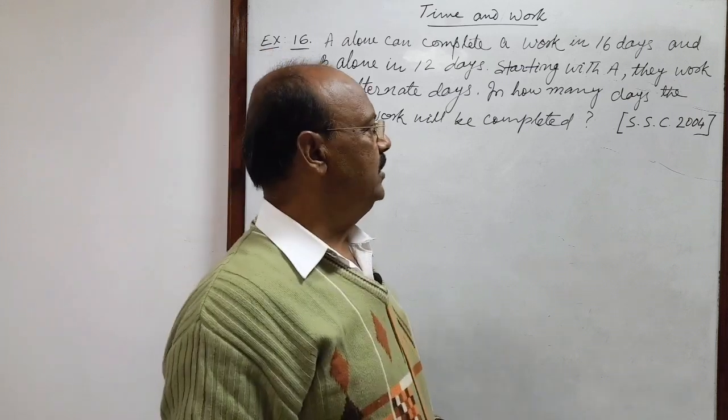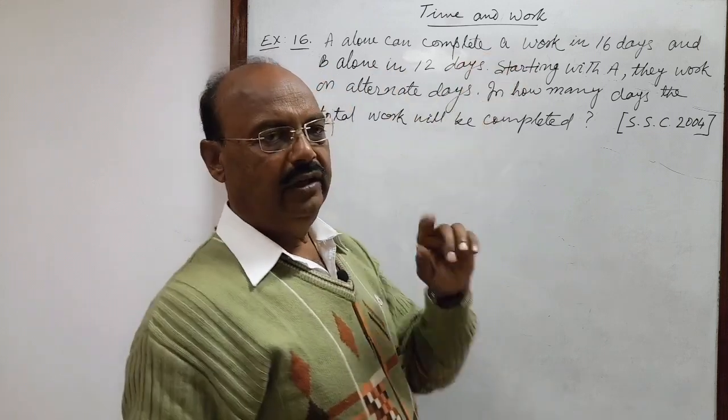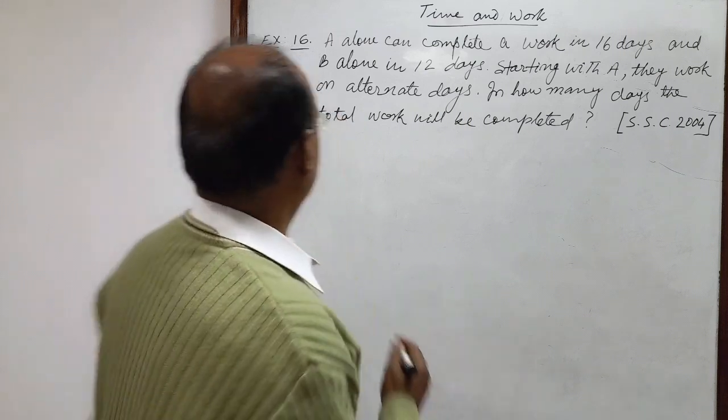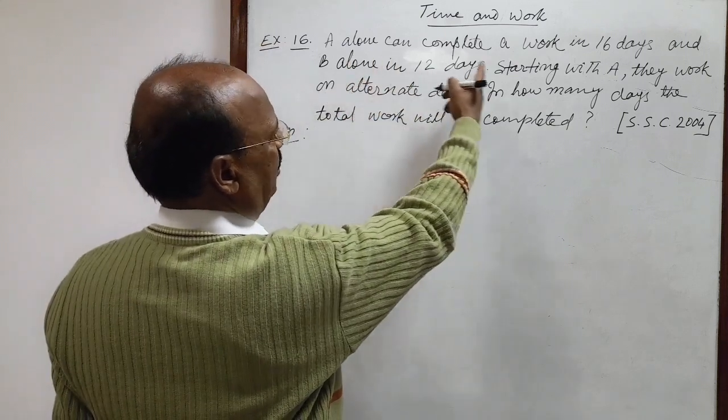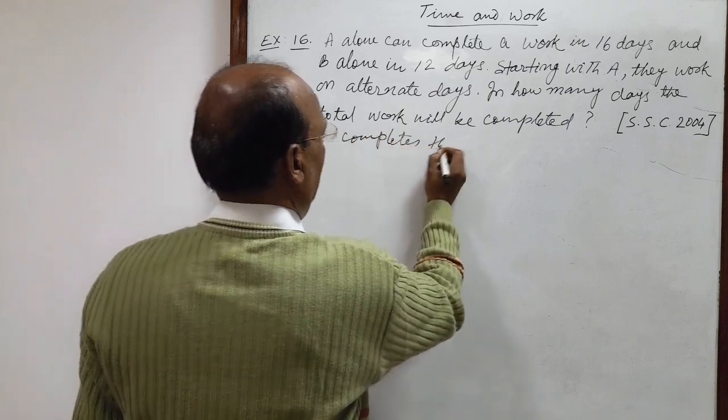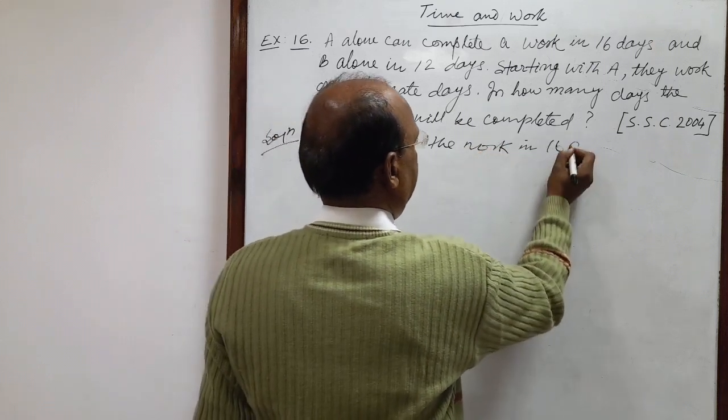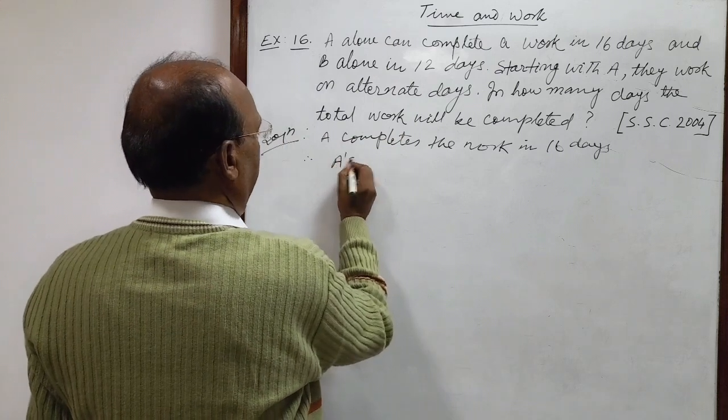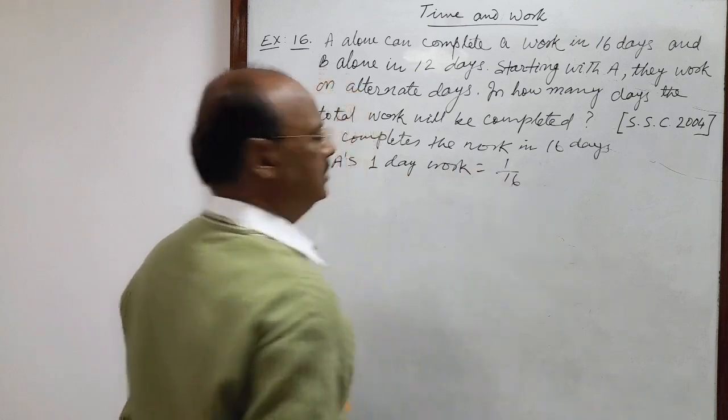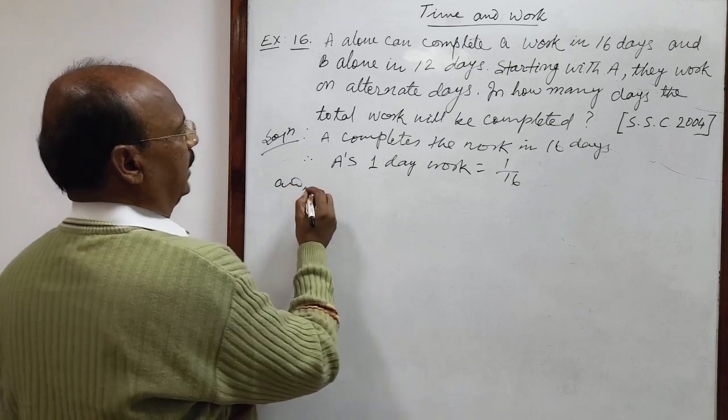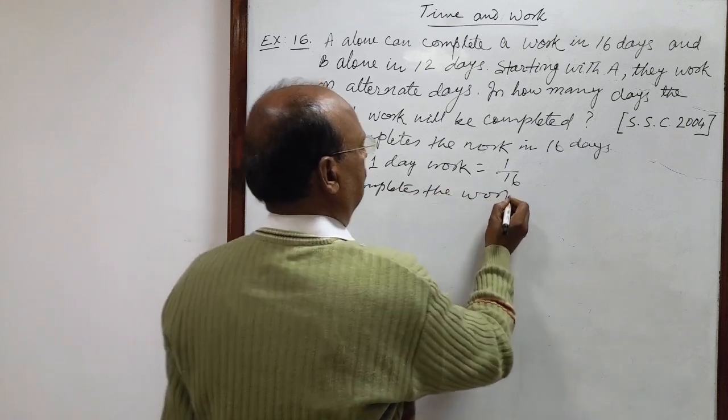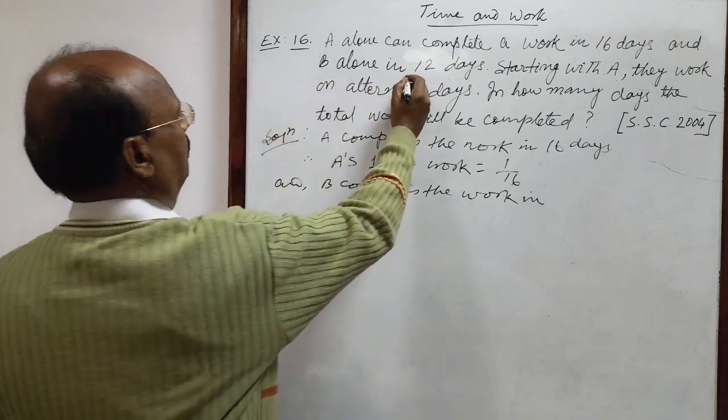First of all we will calculate work done by A and B in one day. A alone can complete a work in 16 days. Therefore, A's one day work will be 1/16 by unitary method, and B completes the work in 12 days.